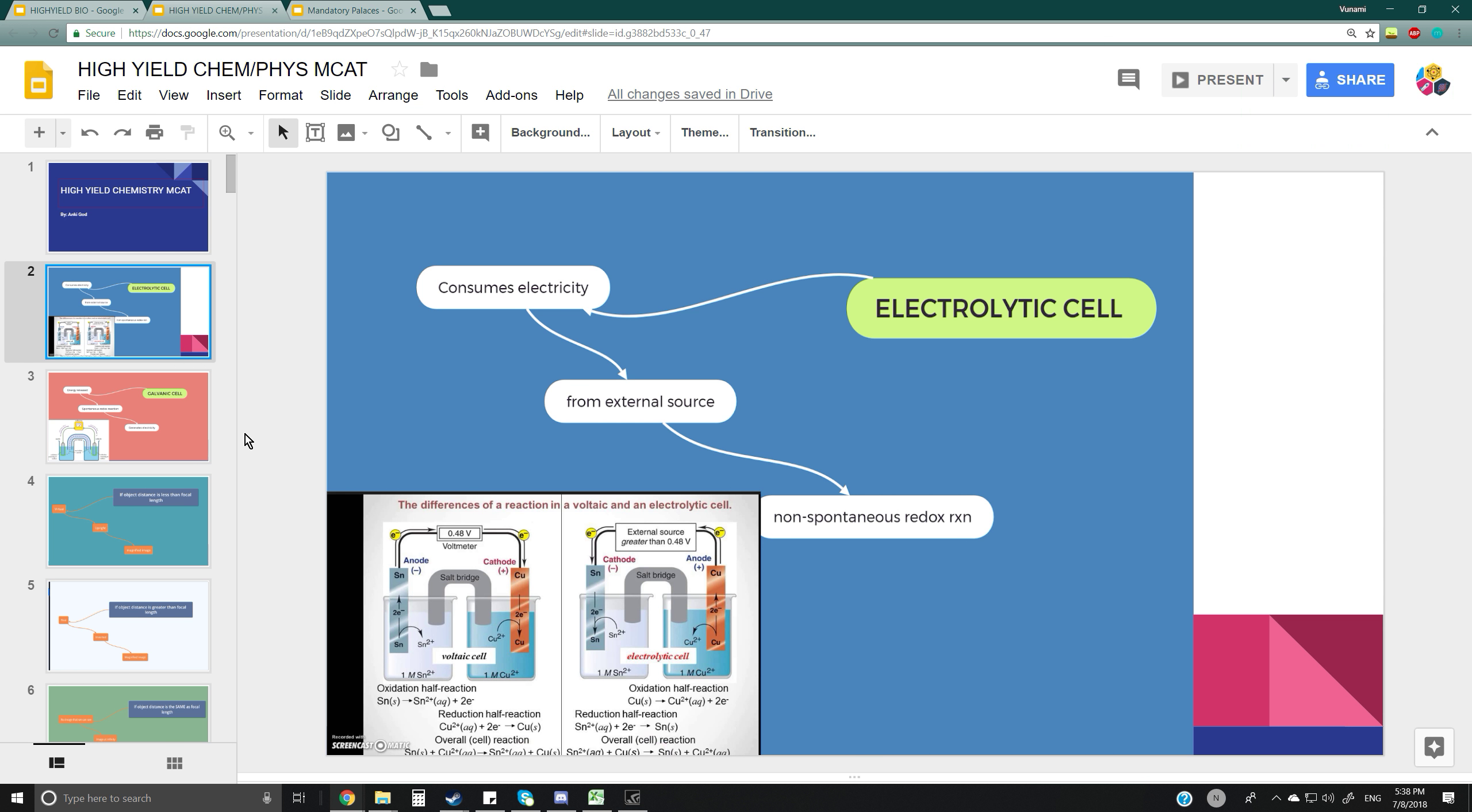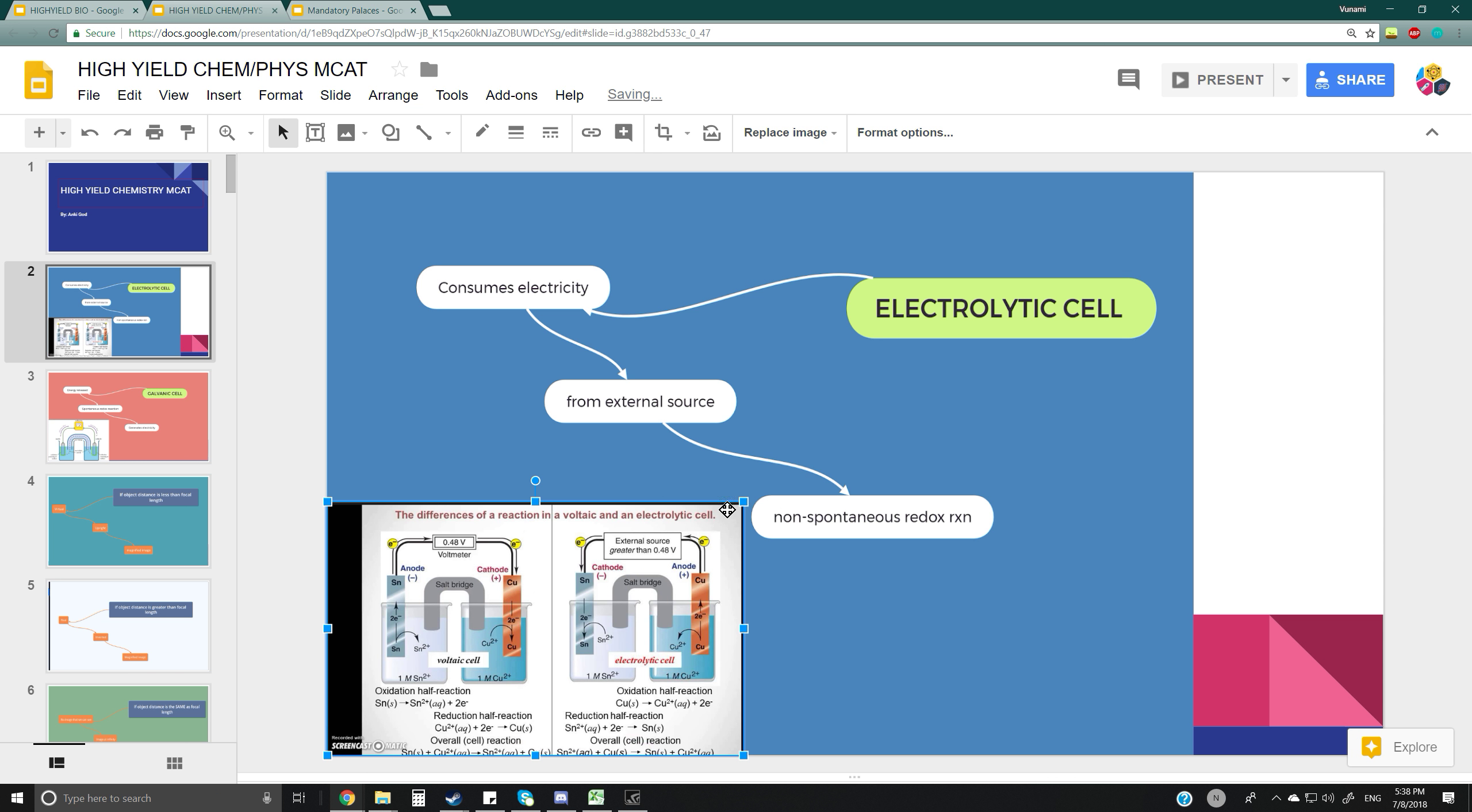Electrolytic cells and galvanic cells are different from each other. For the MCAT, you need to know that electrolytic cells use an external source. They're non-spontaneous and consume electricity.